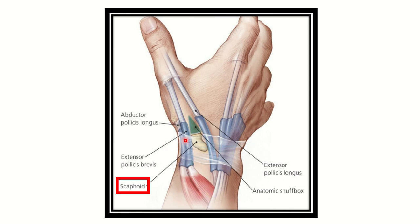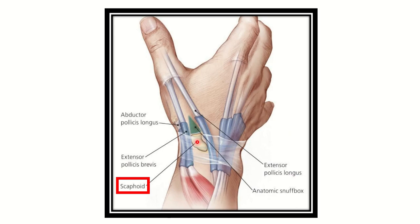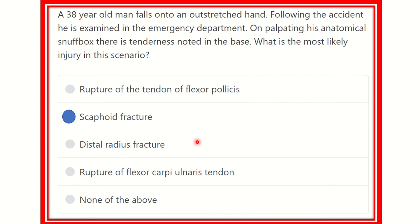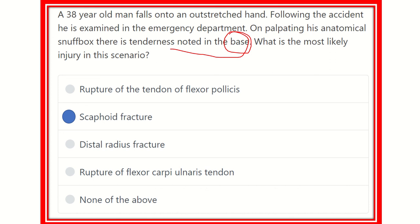Here we can see the scaphoid bone and its fractures. The fracture may occur at any point — there is the proximal fracture, the waist fracture or middle fracture, and the distal fracture. In the second picture we can also see a fracture of the scaphoid, and the highlighted area shows the typical pain locations for a scaphoid fracture.